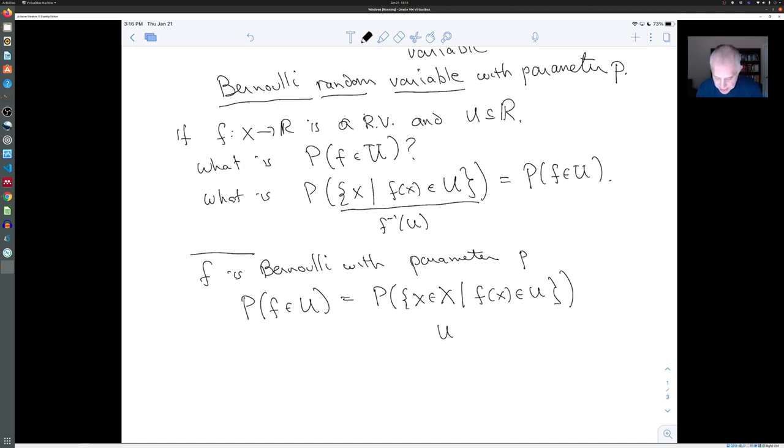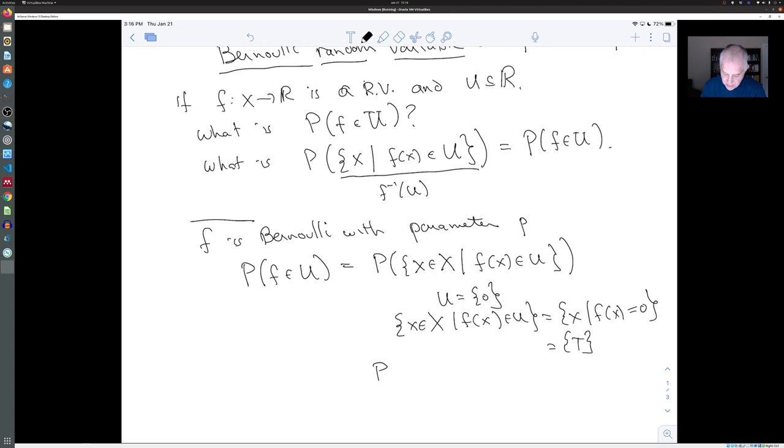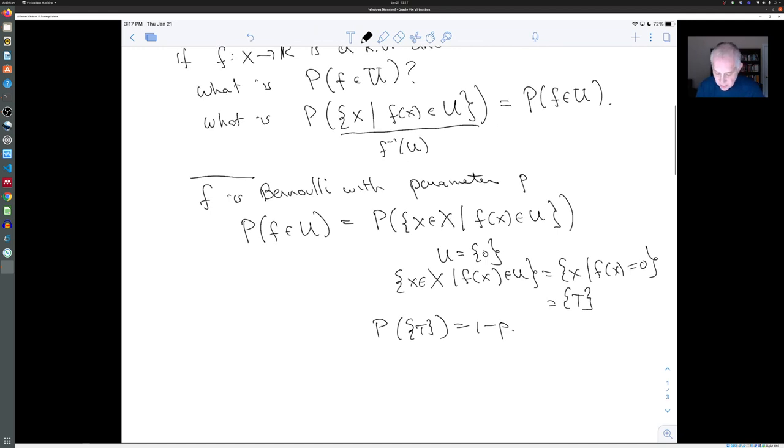So let's think about what U is. If U is just the set zero, then the set of X in X, so that f of X is in U, this is just the set of X, so that f of X equals zero. And that's just tails. And so the probability of that is one minus P.